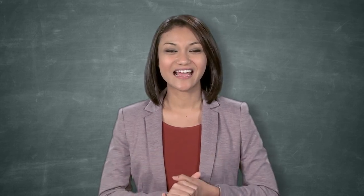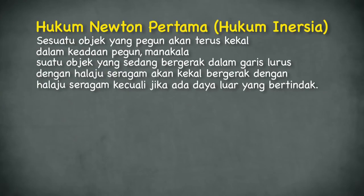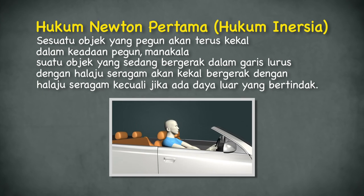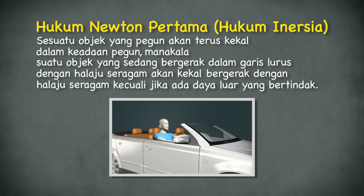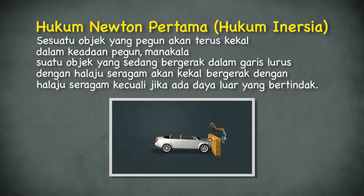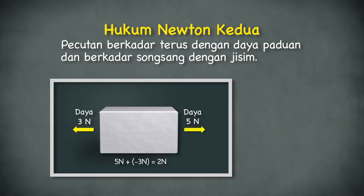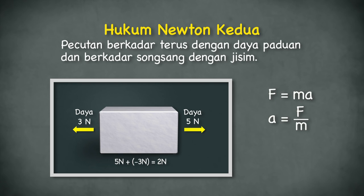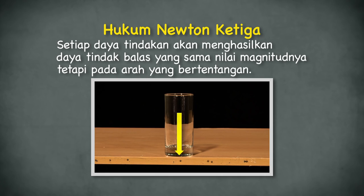Kita sudah menghampiri penghujung rancangan. Apa kata kita imbas kembali topik perbincangan untuk hari ini? Ada tiga hukum Newton yang perlu kita pelajari. Hukum Newton pertama atau hukum inertia: objek yang pegun akan terus kekal dalam keadaan pegun, manakala suatu objek yang sedang bergerak dalam garis lurus dengan halaju seragam akan kekal bergerak dengan halaju seragam kecuali jika ada daya luar yang bertindak. Hukum Newton kedua: pecutan berkadar terus dengan daya paduan dan berkadar songsang dengan jisim; F sama dengan MA, A sama dengan F bahagi M. Hukum Newton ketiga: setiap daya tindakan akan menghasilkan daya tindak balas yang sama nilai magnitude-nya tetapi pada arah yang bertentangan. Sekian saja dari saya, Nadia. Jumpa lagi dalam sesi yang lain. Terima kasih telah menonton!